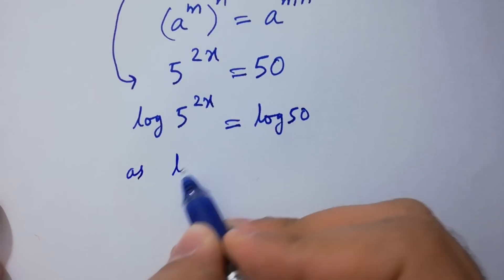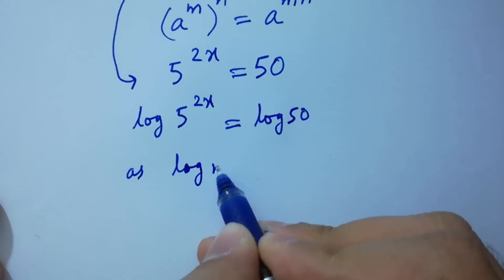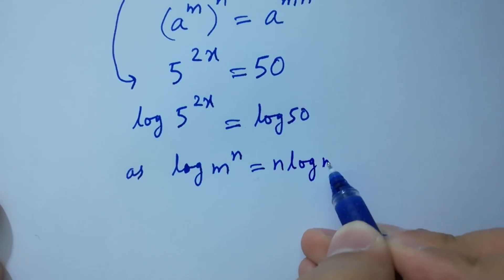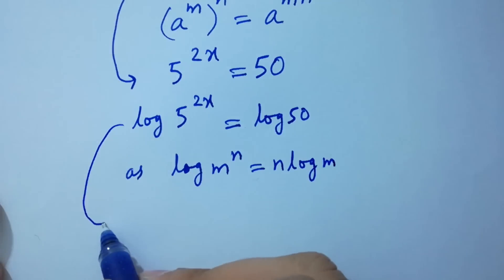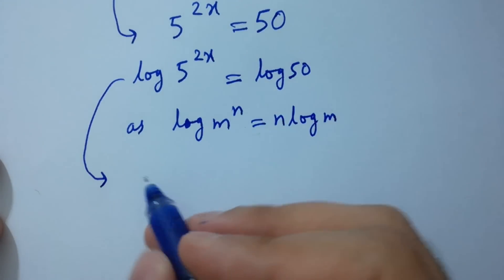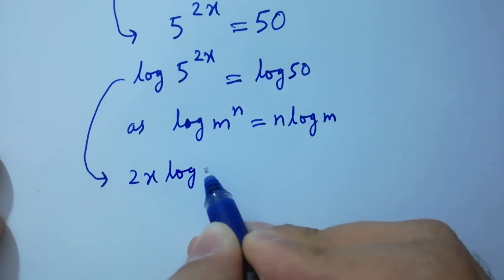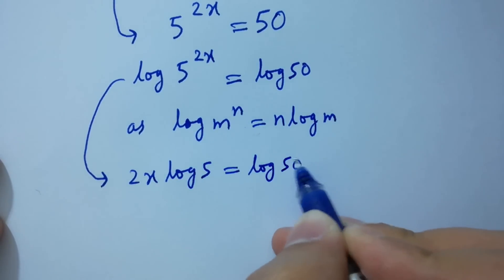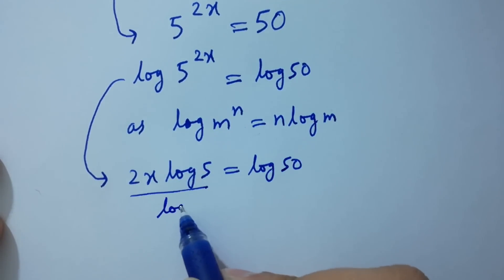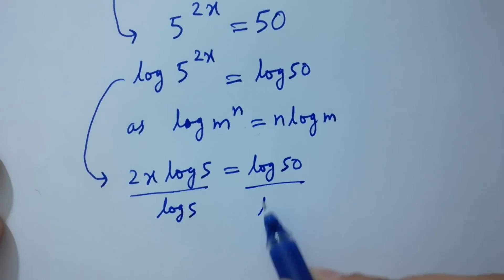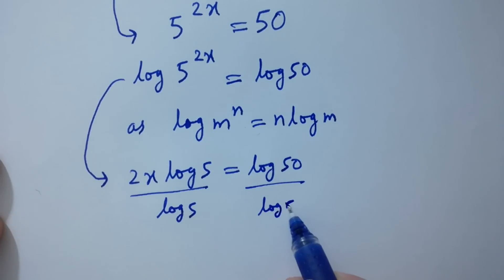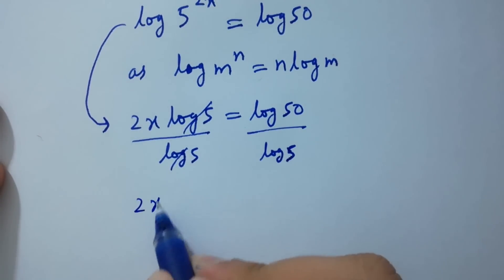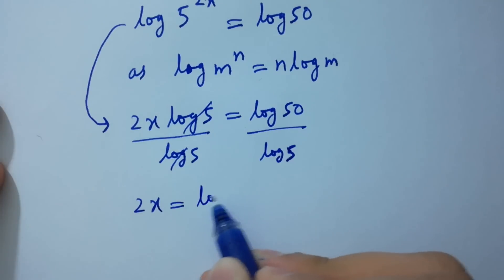Take log on both sides: log 5 to the power 2x equals log 50. As log m to the power n equals n log m, it will be 2x log 5 equals log 50. Divide by log 5 on both sides; log 5 and log 5 cancel, giving 2x equals log 50 over log 5.